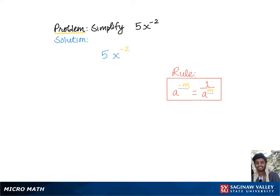It goes both ways. Here in our problem, we have a negative exponent — x to the negative 2 — in the numerator. So to simplify this, we'll move it to the denominator, which gives us 5 over x to the positive second power, which is the final answer.